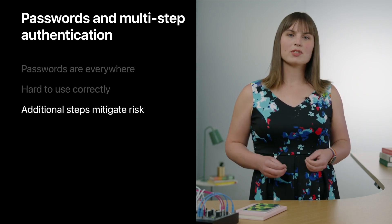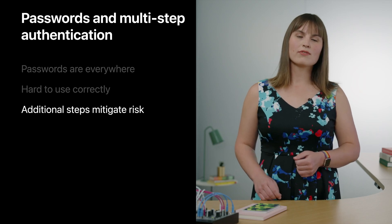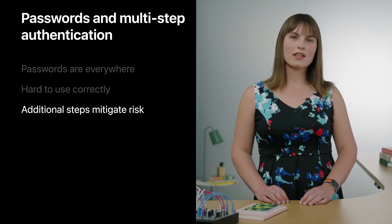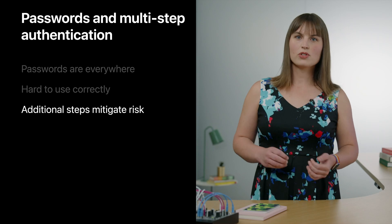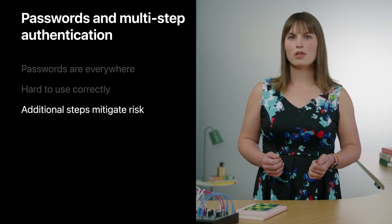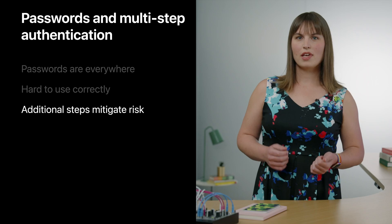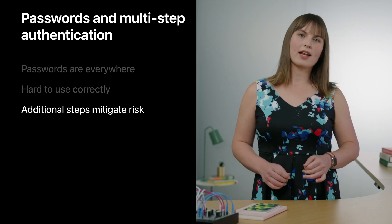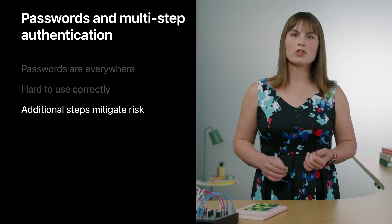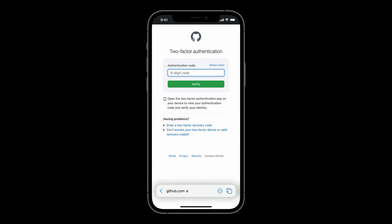Many services add steps to their login flows. They ask for additional pieces of information to confirm someone's identity. Adding steps like this reduces the chance that an attacker with someone's password will be able to access that person's account. It also means the attacker won't automatically have access to any other accounts where that person used the same password. Verification codes are a common additional step. Services ask for these codes after someone has entered their username and password. These codes are either delivered over SMS, email, or a push notification, or they're generated by an authenticator app on the person's phone or with a hardware key fob.